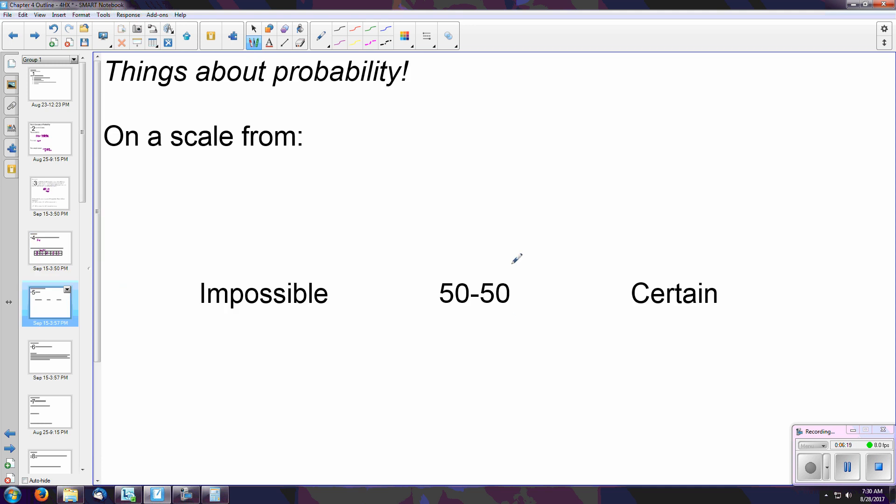A little bit more in terms of what we should know about probability. When you hear probability, there's three special cases, I guess we can call them. 50-50 is like we saw with heads or tails. That means that your probability is split perfect, 50-50.